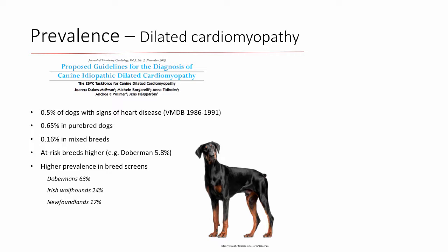Dilated cardiomyopathy: you need to interpret these studies based on what population of dogs they're looking at. From the proposed guidelines for the diagnosis of DCM in dogs from 2003, using the veterinary medical database at Purdue University with a very large number of dogs, about half a percent had DCM — 0.65 percent in purebreds and 0.16 percent in mixed breeds. However, if you targeted specific high-risk breeds like Dobermans, that percentage approached six percent.